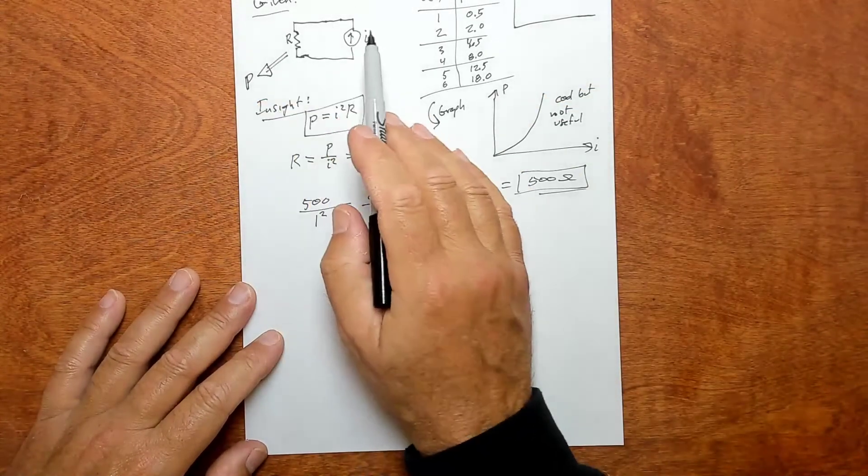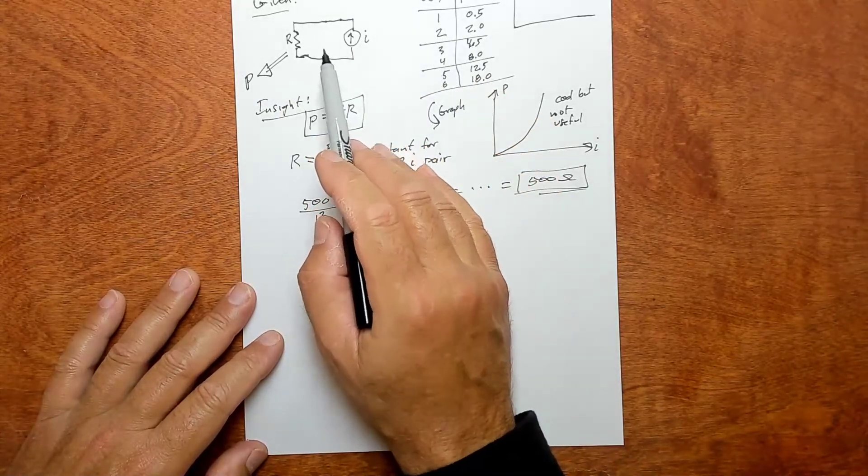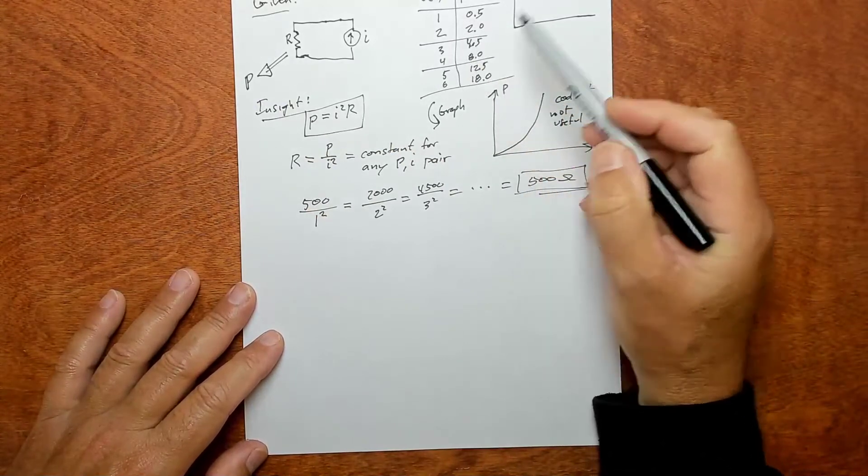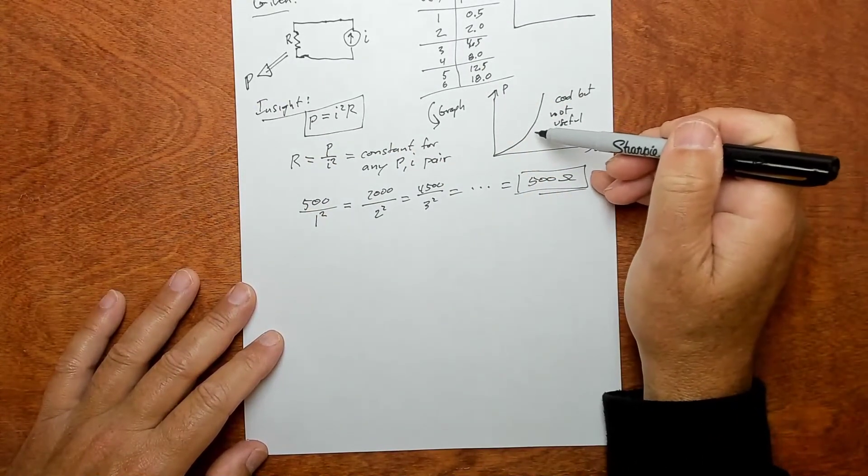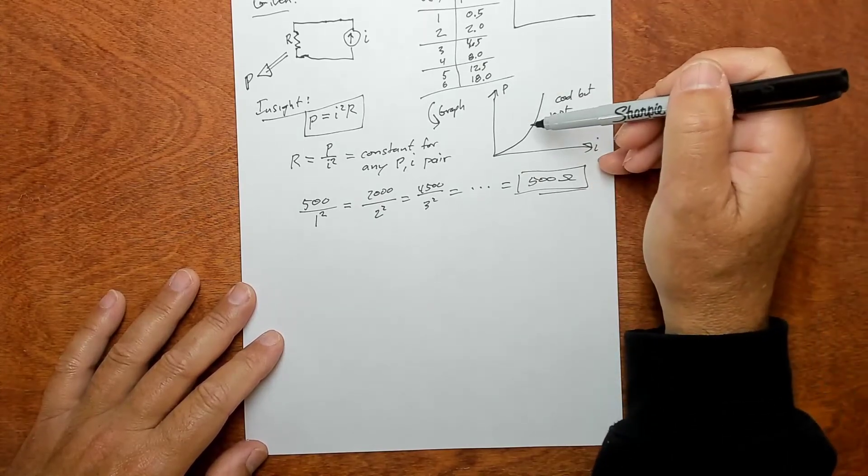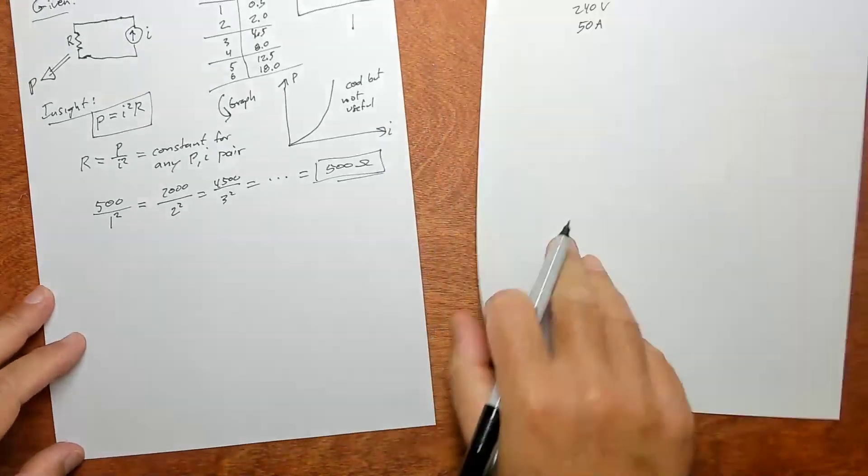And you should draw the circuit because this is a circuits class, so draw the circuit. If there's anything to graph that's not a trivial straight line, I'd like you to graph it. Even if it is, what I mean is if V versus time is just a constant, that's kind of silly.